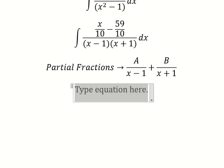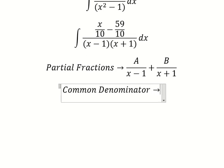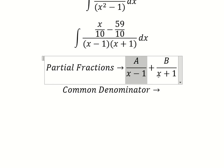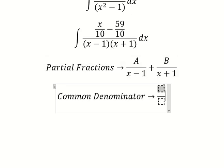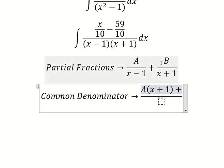Next we can use common denominator. So this one is missing x plus one, so capital A multiplied by this one, and capital B multiplied by x minus number one.